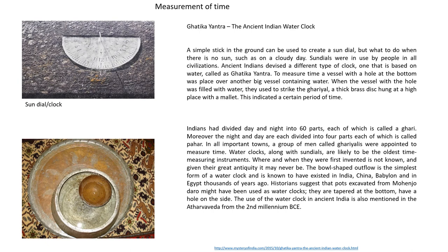We shall now see a more interesting topic: the measurement of time. A simple apparatus was invented by early civilization people for measuring time during the day — the sundial. Sundials were in popular use in almost every civilization; a simple stick in the ground and its shadow could tell time. But for rainy and cloudy days, Indians had the water clock, or Ghatika Yantra.